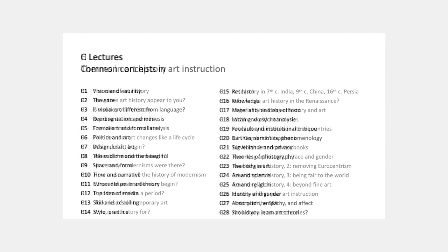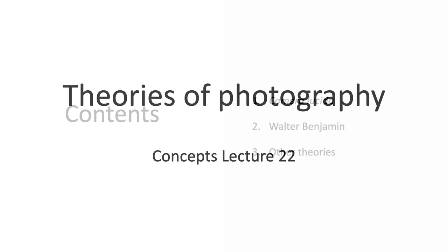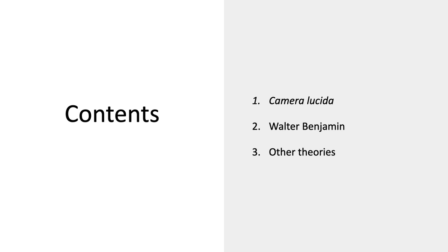Welcome to Theories and Problems in Visual Art. This is Concepts Lecture 22, Theories of Photography. I'll talk first about Roland Barthes' book Camera Lucida, and then an essay by the theorist Walter Benjamin, and then just a selection of other theories, which I picked out of dozens and dozens.